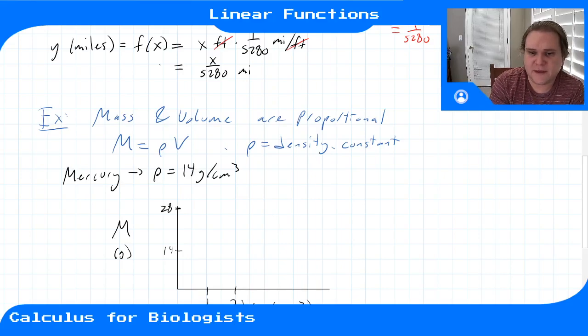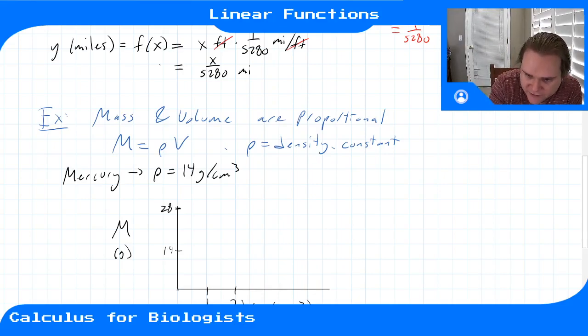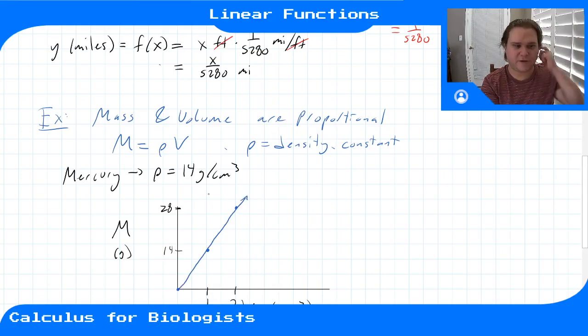If we plot M in grams, the mass of our sphere of liquid, versus the volume in centimeters cubed, they're proportional by 14 grams per centimeters cubed. When you have zero volume, no mercury, it should weigh zero grams - 14 times zero is zero. When you have one centimeter cubed, you'll have M equals 14 times 1, which is 14 grams. When you have two centimeters cubed, you'll have twice that, 28 grams. So this is our function - a straight line with slope 14.